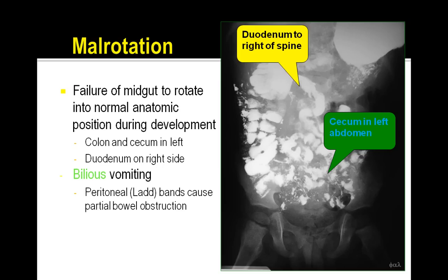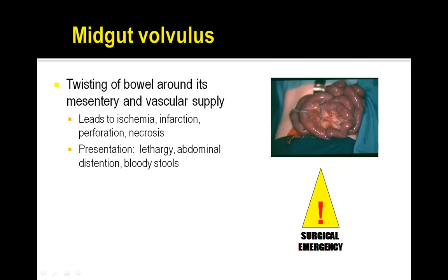This combination is very important in addition to having bilious vomiting. Peritoneal bands cause partial bowel obstruction, so patients are at high risk for any kind of necrosis. Twisting of the bowel around its mesentery and vascular supply can lead to ischemia.